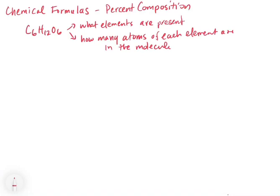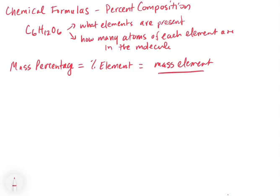Now let's look at percent composition. The mass percentage of a given element in a compound — the percent of an element — is equal to the mass of the element divided by the total mass, times 100. Just like on an exam: the number of questions you got right divided by the total number of questions times 100 gives you your score. So mass percentage tells you how much that element weighs relative to the total mass.